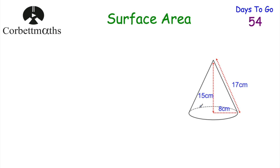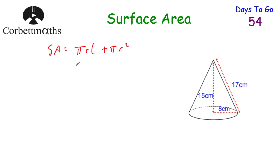The next shape is a cone. To find the surface area of a cone there are two parts: the curved surface, and the circle on the bottom. The curved surface area of a cone is found by pi R L, where R is the radius of the base — 8 in this case — and L is the slant height, that diagonal length, which is 17 centimetres. So we do pi times 8 times 17 for the curved surface, plus pi R squared for the area of the base.